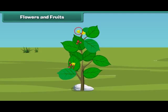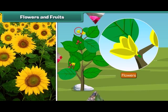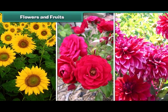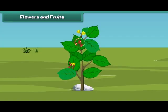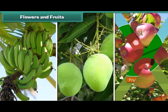Friends, now let us know about the most attractive and most beautiful part of the plant — yes, that is the flower. Flowers are of different colors and types like sunflower, rose and dahlia and so on. I know that most of you also like fruits. Fruit is the juicy part of the plant. Fruits come in different shapes, sizes and colors like banana, mango, apple and oranges.